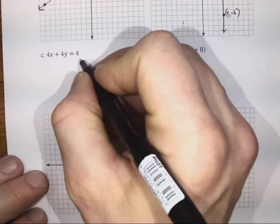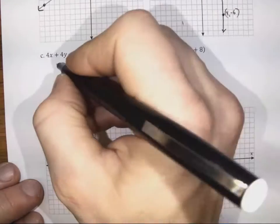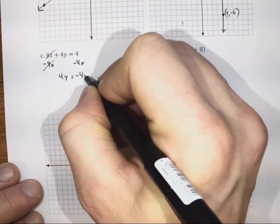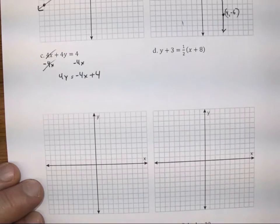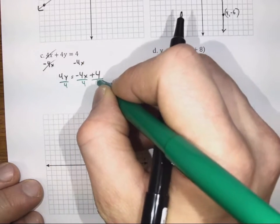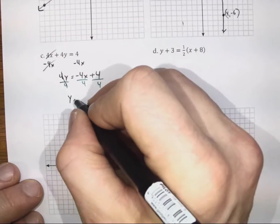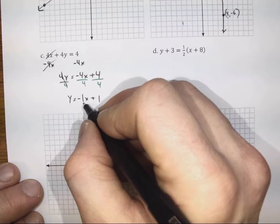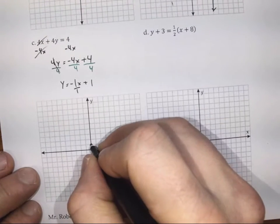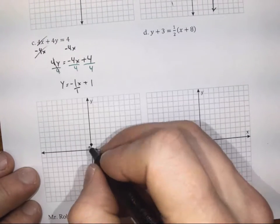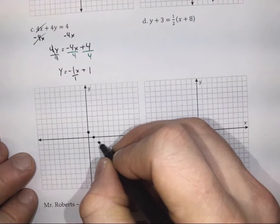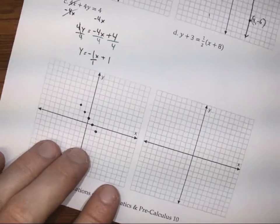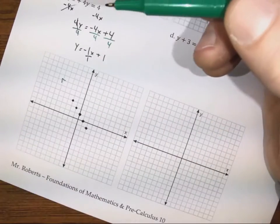Let's finish this off. I'm going to subtract 4x from both sides, giving 4y = negative 4x plus 4. Then I divide by 4 to get y = negative 1x plus 1. So the slope is negative 1 over 1 and the y-intercept is 1. We put the y-intercept at 1, then rise negative 1 and run 1, or equivalently rise 1 and run negative 1. That gives us our line.